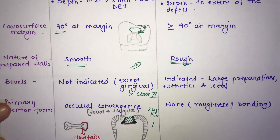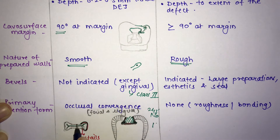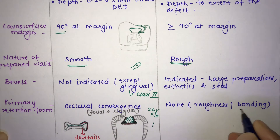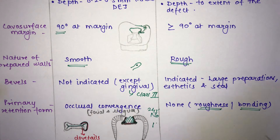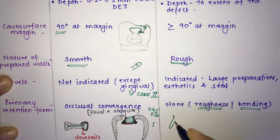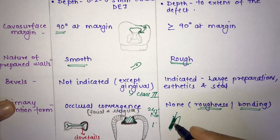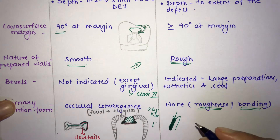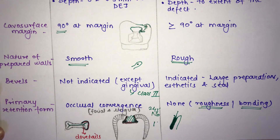Another retention form for amalgam is the dovetail, involving the triangular fossa. In composite, no such retention form is required because retention is achieved through bonding — etching roughens the surface, the bonding agent is applied, and micro-tags form. The composite material flows into these micro-tags and adheres to the tooth, so convergence forms are unnecessary.